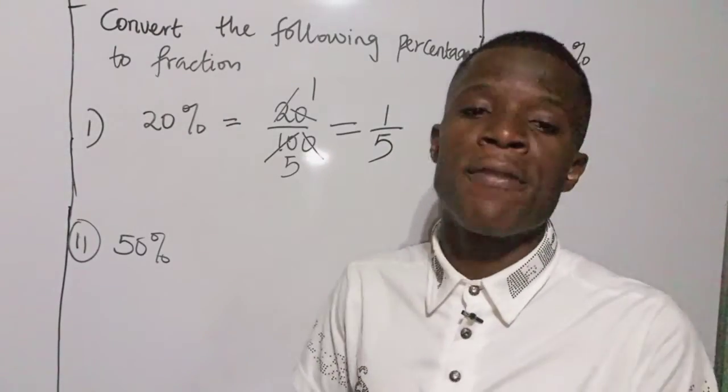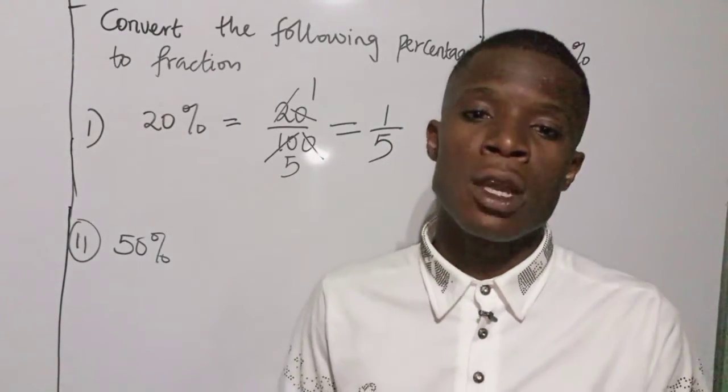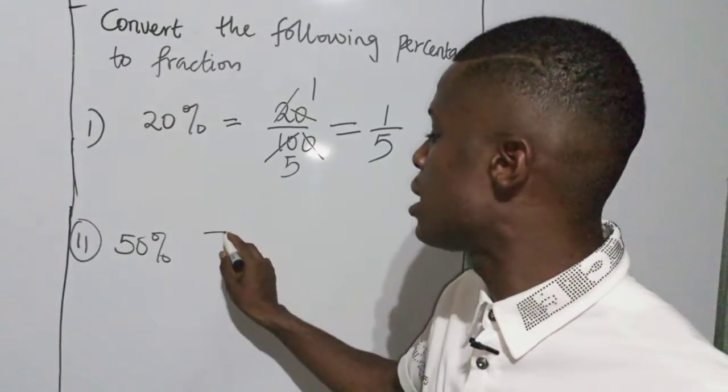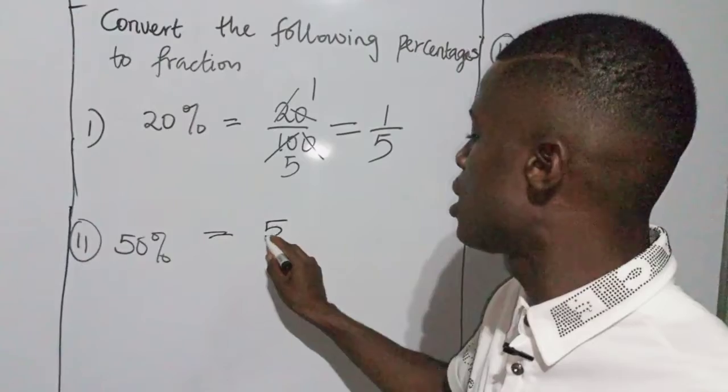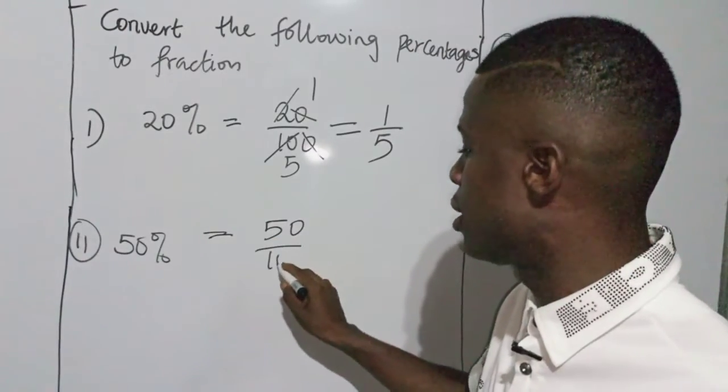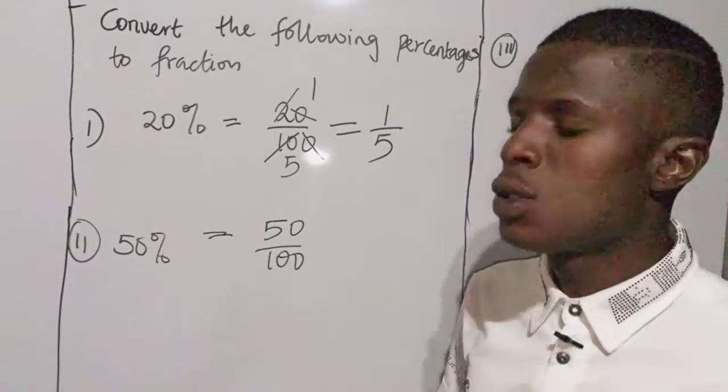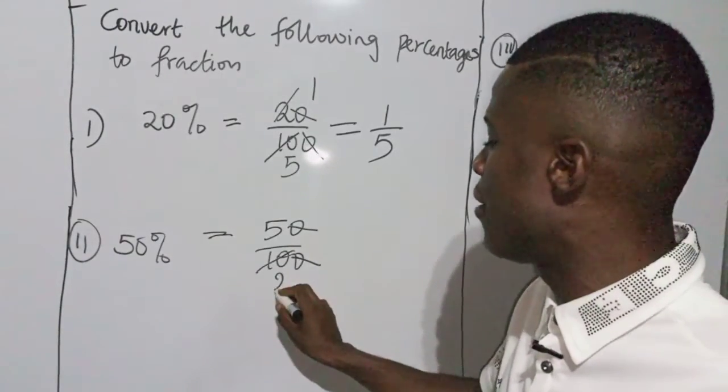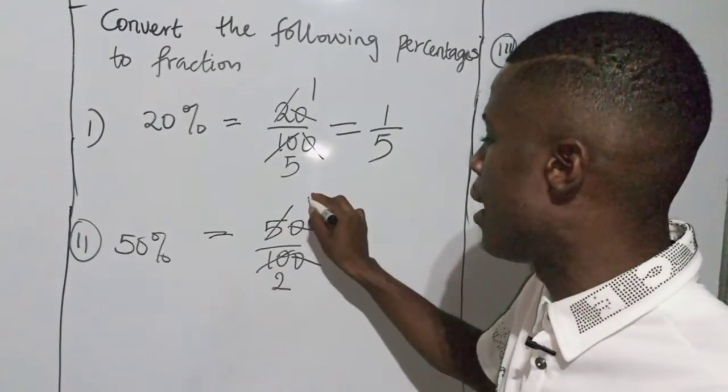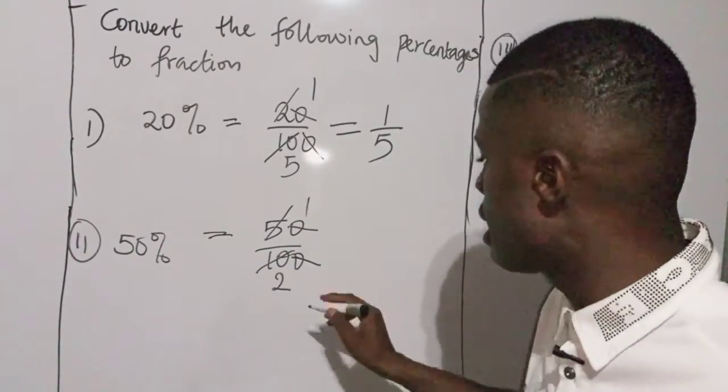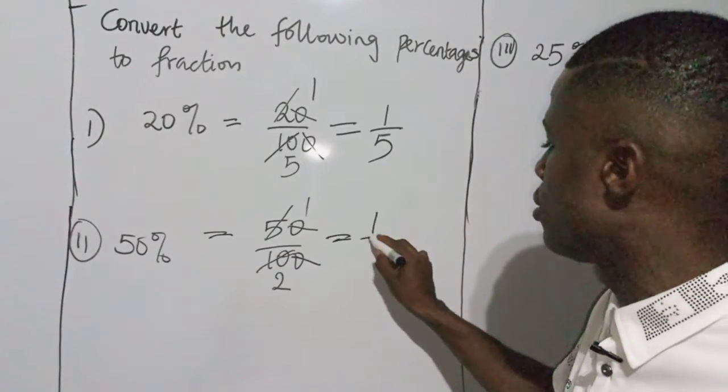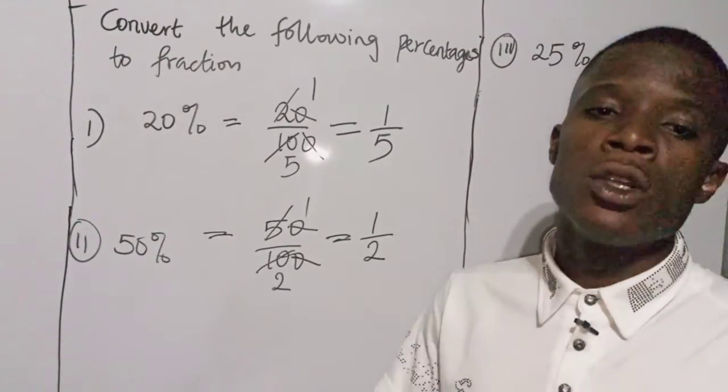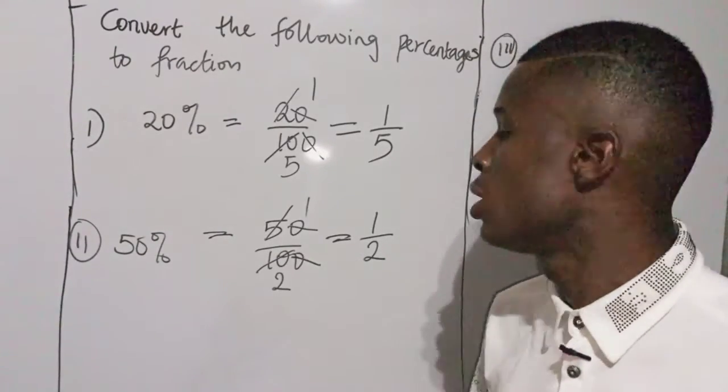Then the next one is 50%, 50 over 100. So we cancel out the zeros, then five divide, I'm having two, five divide, I'm having one. So you can see at the end I'm having one over two. So I have converted 50% to a fraction. Converting 50% to a fraction gives us one over two.